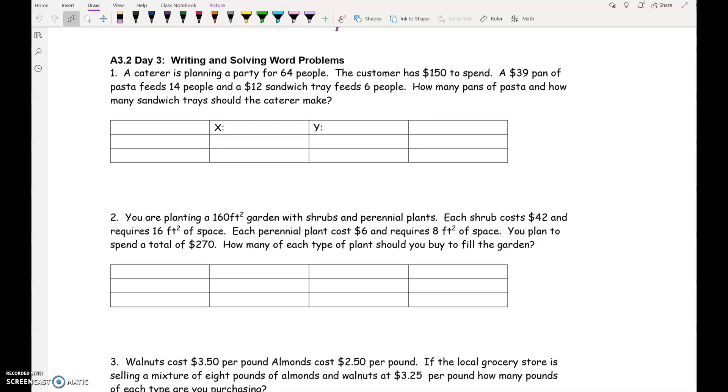This first problem says, a caterer is planning a party for 64 people. The customer has $150 to spend. A $39 pan of pasta feeds 14 people. A $12 sandwich tray feeds 6 people. How many pans of pasta and how many sandwich trays should the caterer make?